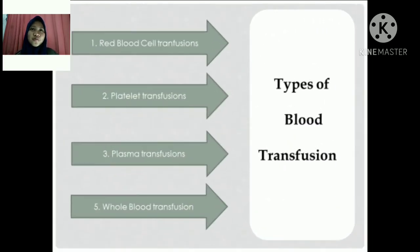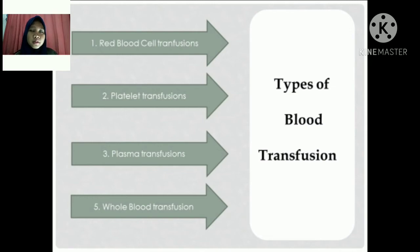Next, I will tell you about the various types of blood transfusion. According to the American Red Cross, there are four common types of blood transfusion. One: red blood cell transfusion. A person may receive a red blood cell transfusion if they have experienced blood loss, if they have anemia such as iron deficiency anemia, or if they have a blood disorder.